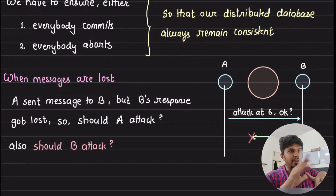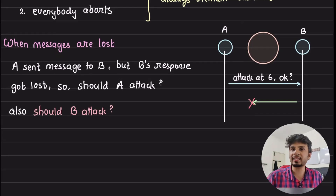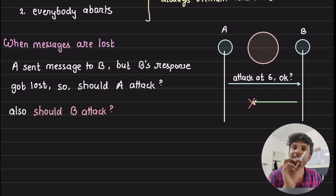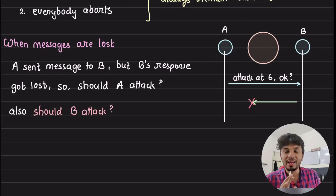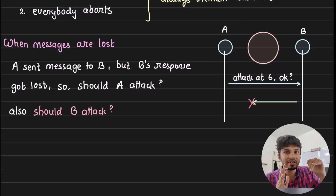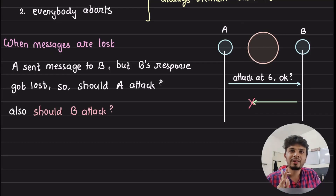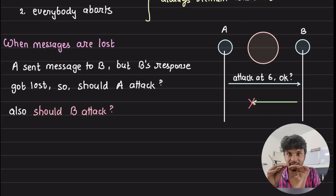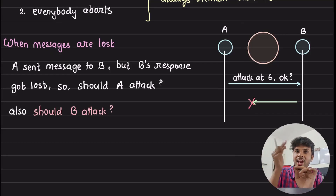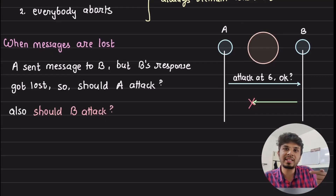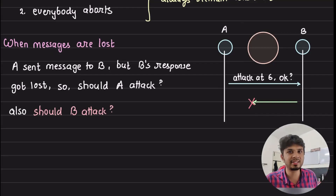Now let's see what happens when messages are lost. A sends a message to B: 'Let's attack at 6 — are you okay with the timing?' B sends 'Okay,' but this message never reaches A. According to B, it is attacking at 6, but since A never received B's reply, A would not attack. They have not reached a consensus — yes or no. If B attacks and A does not, they lose the battle. As soon as you assume an unreliable network, you can see how difficult it gets to build consensus.